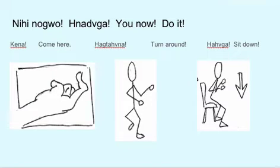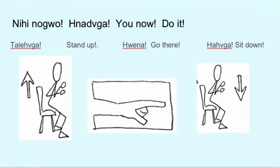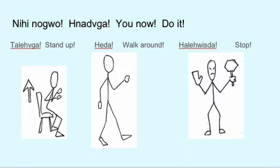Nihihnogui. Nadaga — Now you do it. Notice the H sound. Nadaga — that indicates you alone do it. Nihi. Nadaga. Kena — Come here. Hakdahana — Turn around. Hahaga — Sit down. Nihihnogui. Nadaga. Talehaga — Stand up. Wena — Go there. Hahaga — Sit down. Nihihnogui. Nadaga — You do it now.